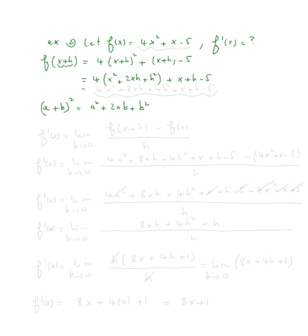Now we distribute the four, and we get four x squared plus eight x h plus four h squared plus x plus h minus five.